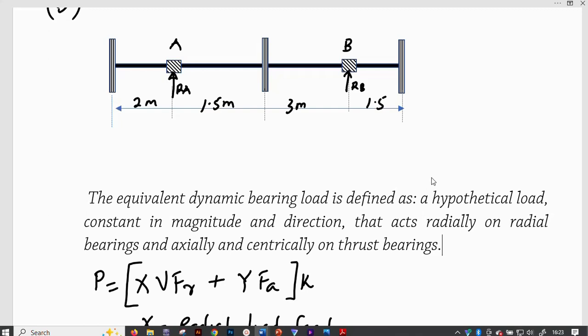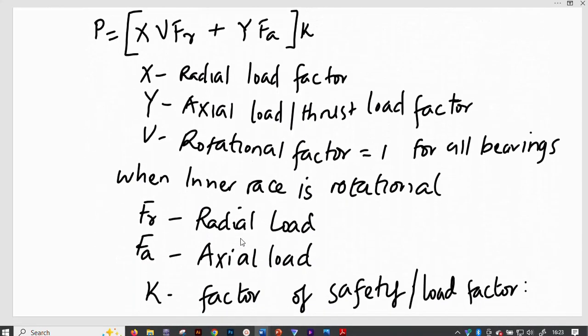Now, axial bearing support axial loads and radial bearing support basically radial loads. Now, this is the formula that can be used, an expression that can be used to determine the equivalent dynamic load carrying capacity of the bearing and is equal to X V FR plus Y FA everything multiplied by a load factor, that is, if it is provided for.